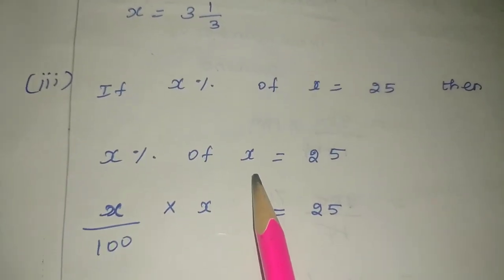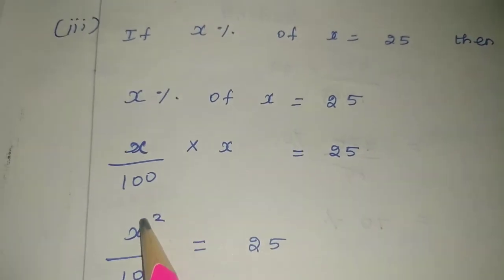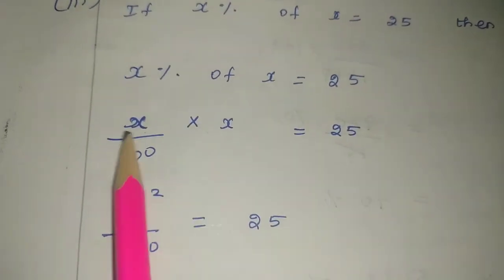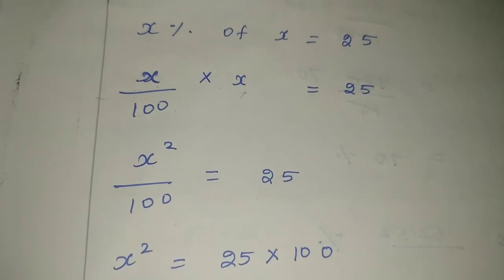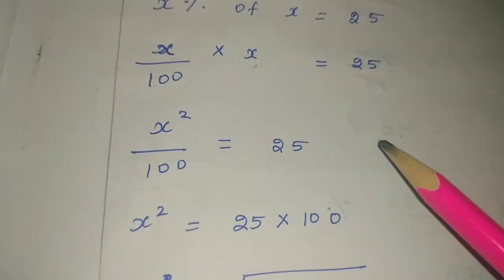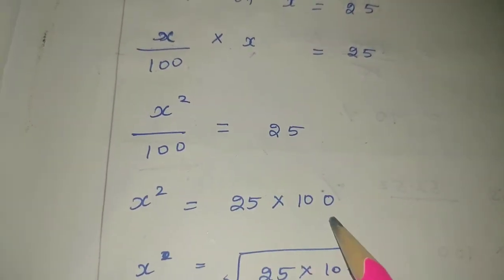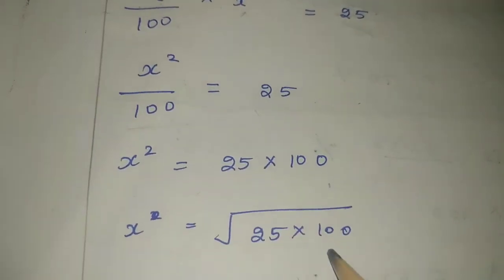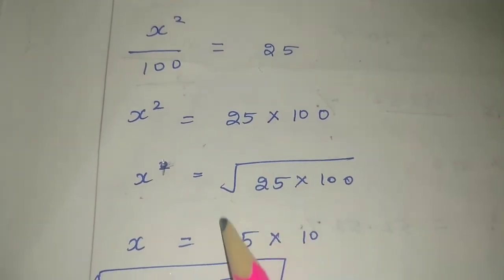Next problem: x percentage of x equals 25. So, x divided by 100 into x equals 25. That gives x squared by 100 equals 25. Moving the denominator to the other side — division becomes multiplication — so x squared equals 25 into 100. To solve, we apply square root on both sides: x equals root of 25 into 100.